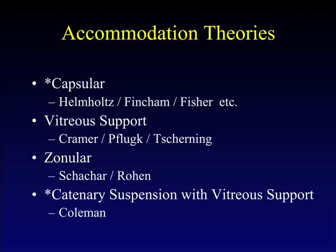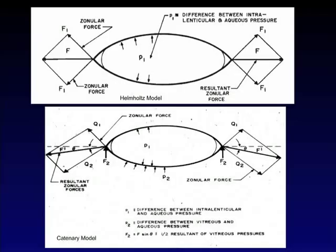However, others have reported and redefined vitreous support as a major portion of accommodation. Our own efforts relate to that same concept of vitreous support. We have used a model — a free body diagram — to demonstrate what is happening with force on the equator of the lens that either stretches the lens, causing the elastic capsule to release and the lens to round up, or with an additional force of vitreous pressure behind the lens, changing the vector of forces and allowing the anterior lens to respond differently.